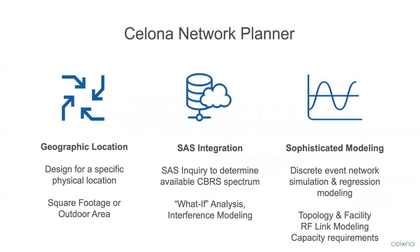The Salona Network Planner includes the following key features: determination of geographic location to design for a specific physical location based on address or GPS coordinates; understanding square footage requirements for indoor coverage or drawing on a map the outdoor area for outdoor coverage requirements; and spectrum access system integration, including real-time SAS inquiry to determine available spectrum in the CBRS band at the specific location being designed for. What-if analysis modeling is also included to understand spectrum changes and how that impacts ultimate capacity requirements and eNodeB quantity.